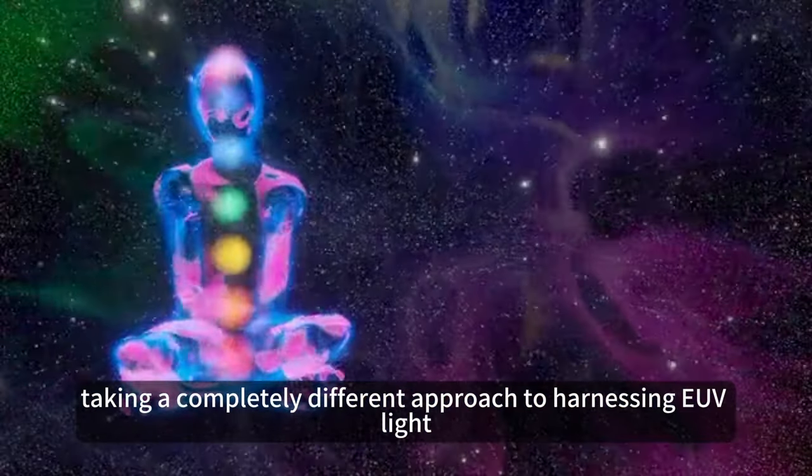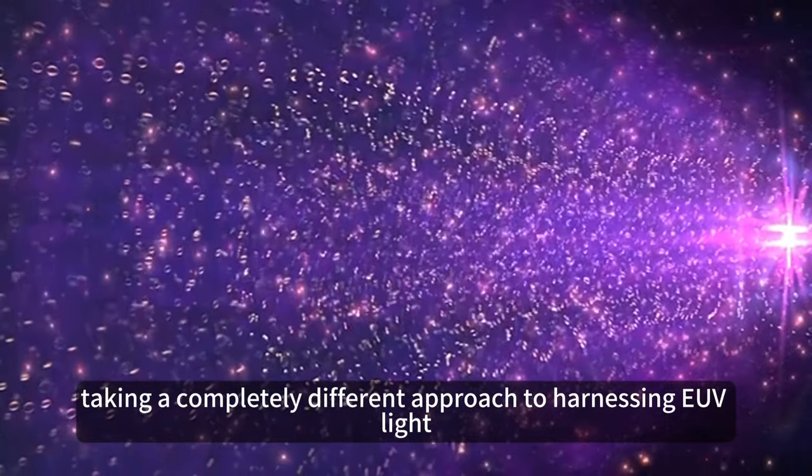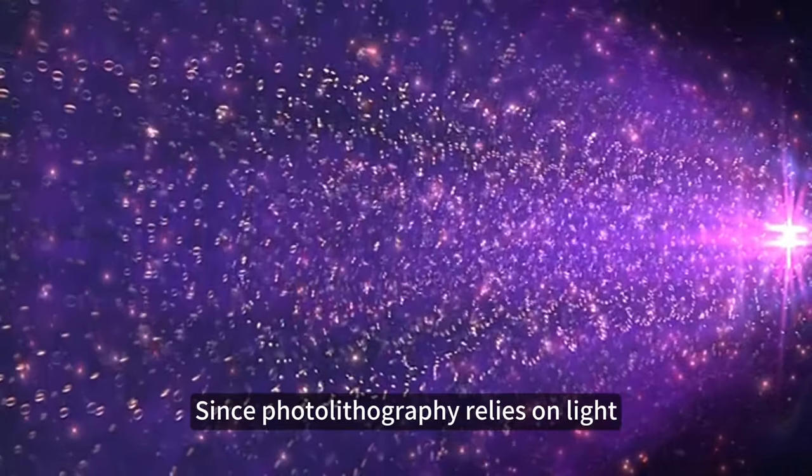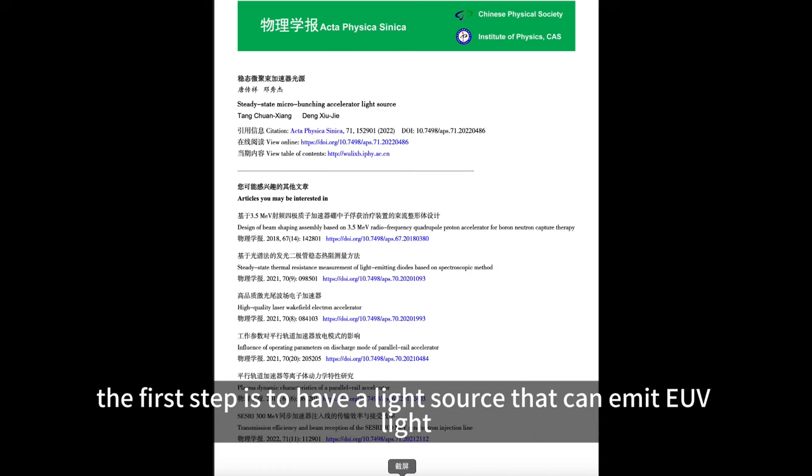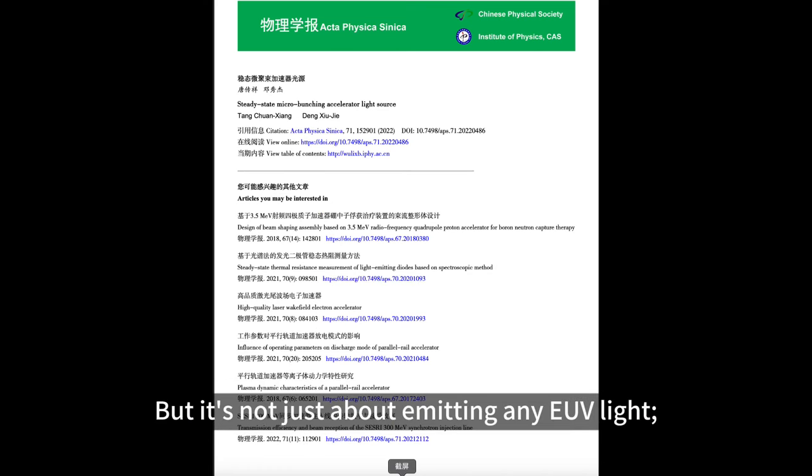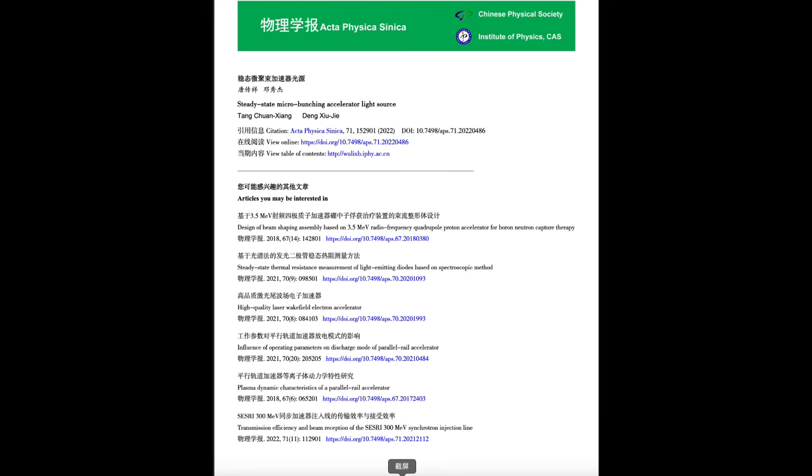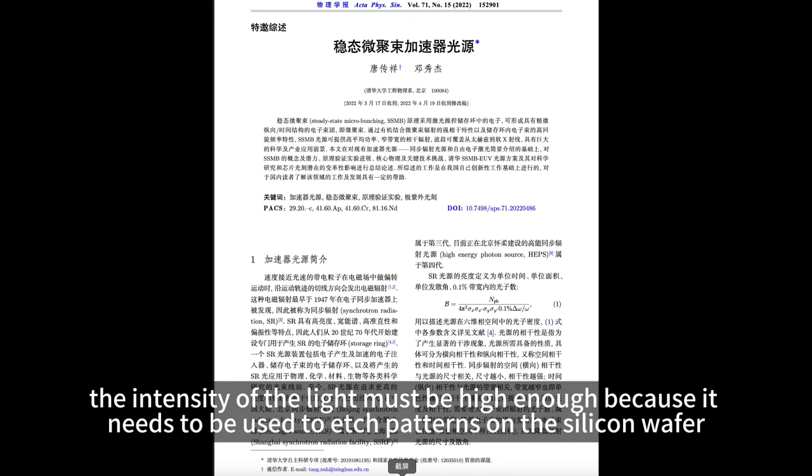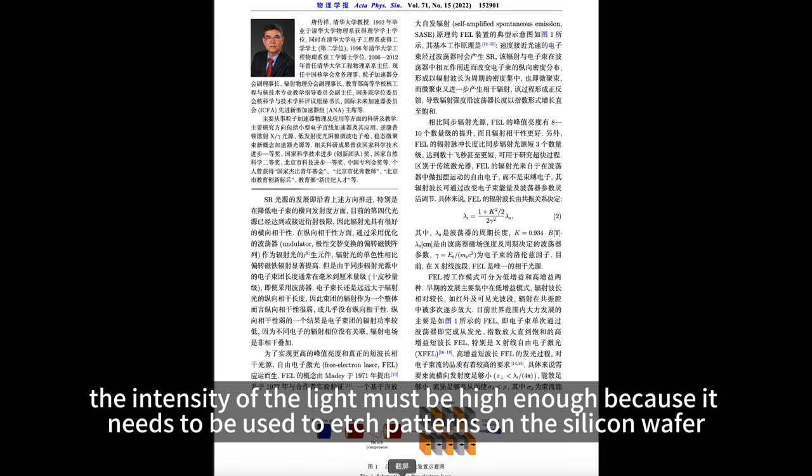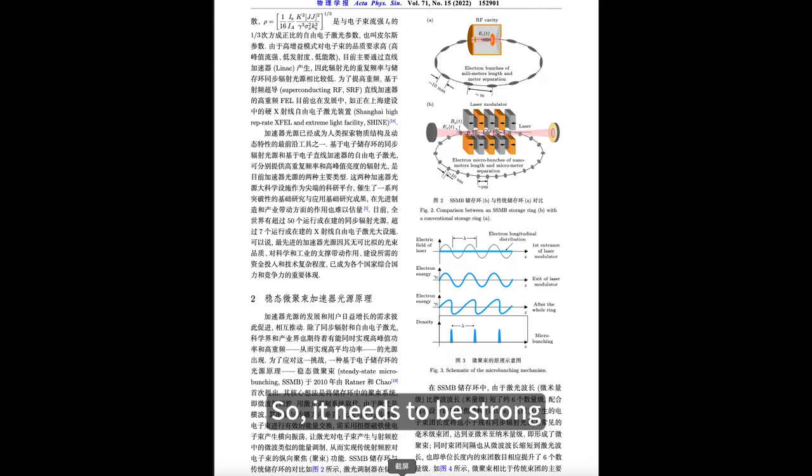Now Tsinghua University has come up with a solution, taking a completely different approach to harnessing EUV light. Since photolithography relies on light, the first step is to have a light source that can emit EUV light. But it's not just about emitting any EUV light—the quality of this EUV light is crucial. Firstly, the intensity of the light must be high enough because it needs to be used to etch patterns on the silicon wafer, so it needs to be strong.